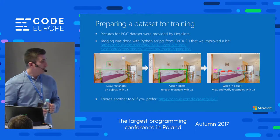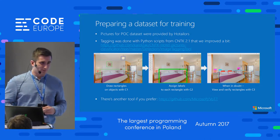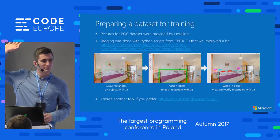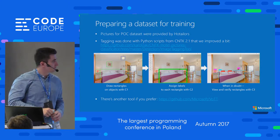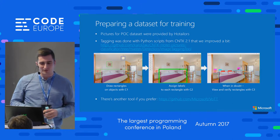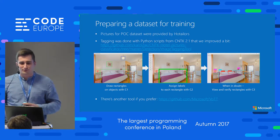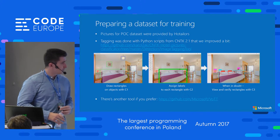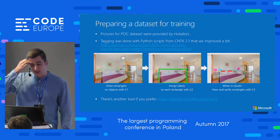How did we do it? The most exhausting part is preparing the dataset. I don't know how many of you have worked with neural networks or deep learning frameworks — about 50-50. Guys who have worked with these tools know that preparing the dataset is the most exhausting thing to do. That's why our POC was limited to two types of images and only four objects per type. To prepare the dataset we used Python scripts from CNTK 2.1.